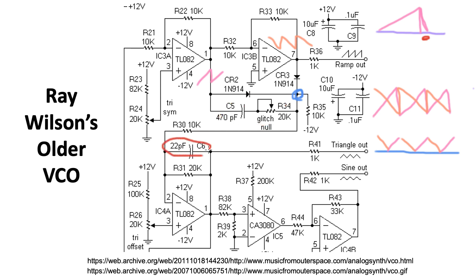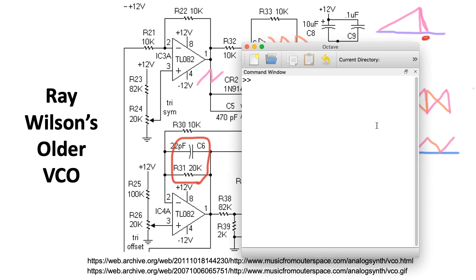I'm also wondering what this 22 picofarad capacitor is doing. Let's compute the cutoff frequency associated with that: 1 divided by 2π times 22e-12 times 20e3, and that gives me 361 kHz. So this capacitor here is for stability and it's not trying to have a musical effect.